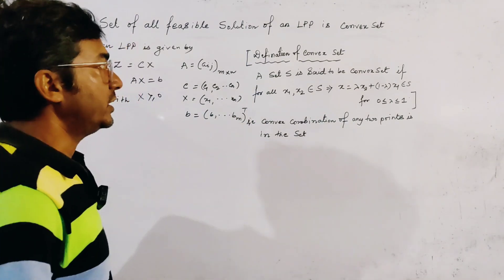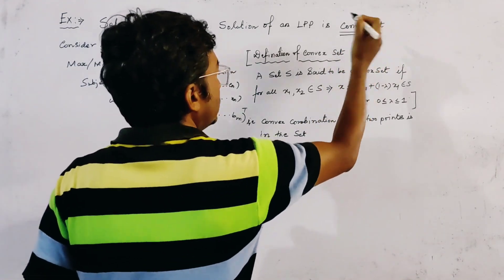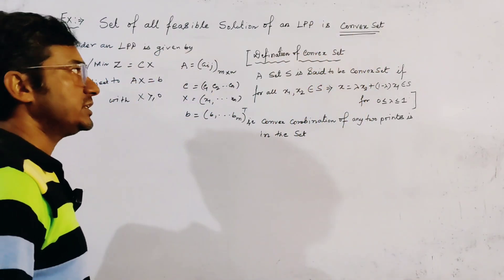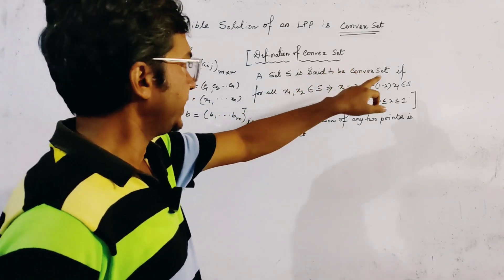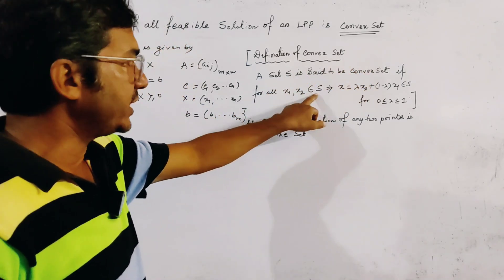Here we first understand about the convex set. What is convex set? The definition of convex set is, a set S is said to be convex set, if for all X1, X2 belongs to S.